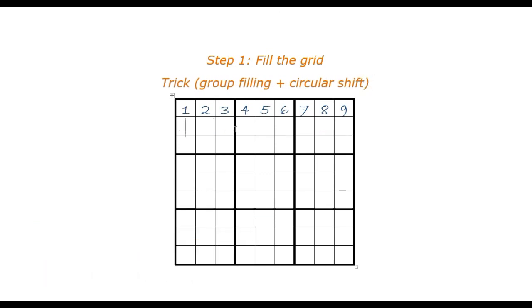Notice the second row. If we shift the first row by three slots and then fill with four, five, six, seven, eight, nine, one, two, three, you notice that the constraints are satisfied. We do the same thing for the third row, putting a shift of three slots of the second row, and that works.